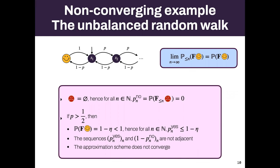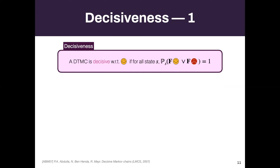Even though at the limit the probability of reaching the target equals this finite-horizon approximation, the approximation scheme from the previous slide will not converge. You will never know you are close enough to the real probability you are looking for.